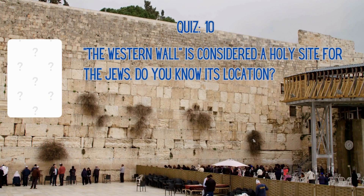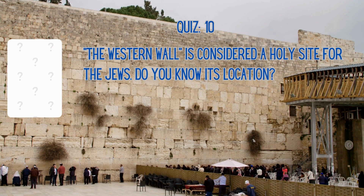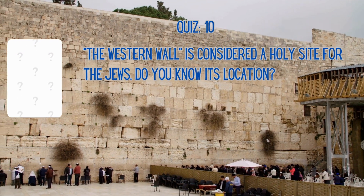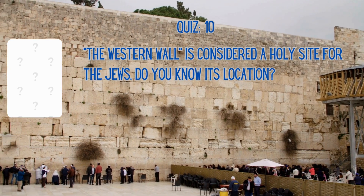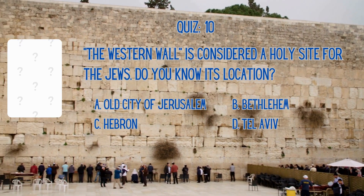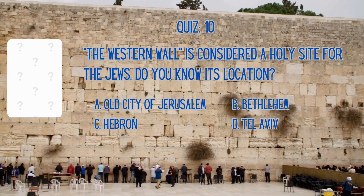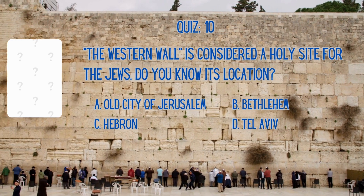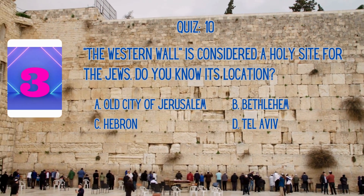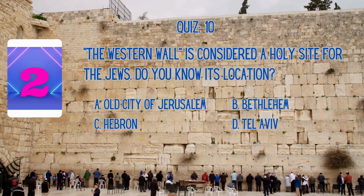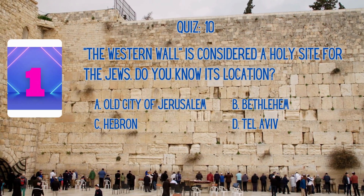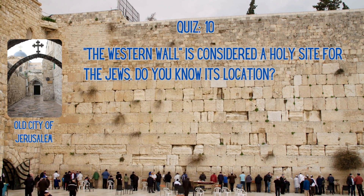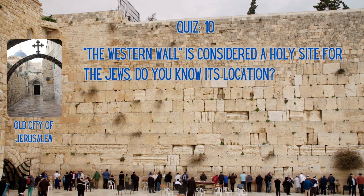The Western Wall is considered a holy site for the Jews. Do you know its location? Is it A. Old City of Jerusalem, B. Bethlehem, C. Hebron, or D. Tel Aviv? The correct answer is Old City of Jerusalem.